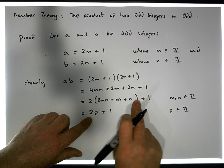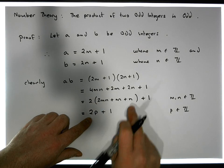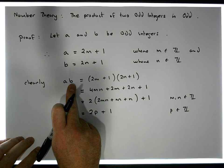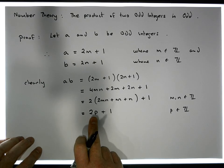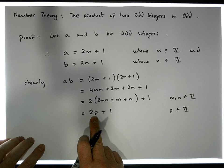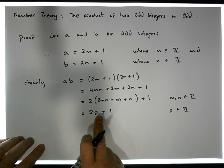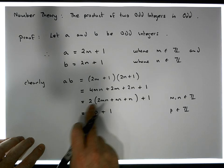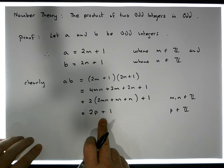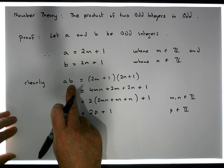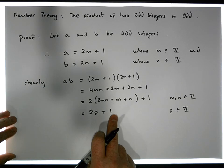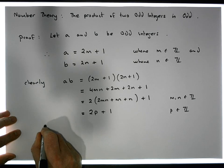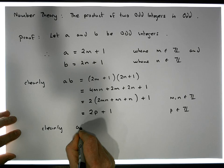We let p equal that integer term, so the product ab equals 2p + 1, where p is an element of the integers. What we've shown is that ab equals an even number 2p plus 1, which is precisely the definition of an odd number from the division algorithm. The product ab is not divisible by 2, so it must be odd.